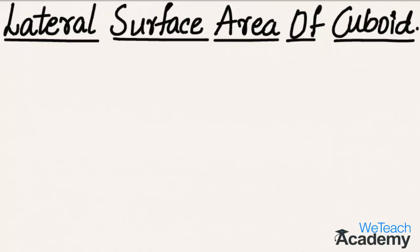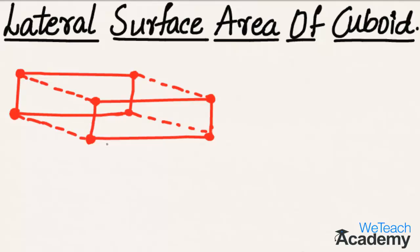Here we have a simple closed figure in which all the sides are in the form of rectangles, and it consists of a length, breadth, and a height. Such a figure is called a cuboid.